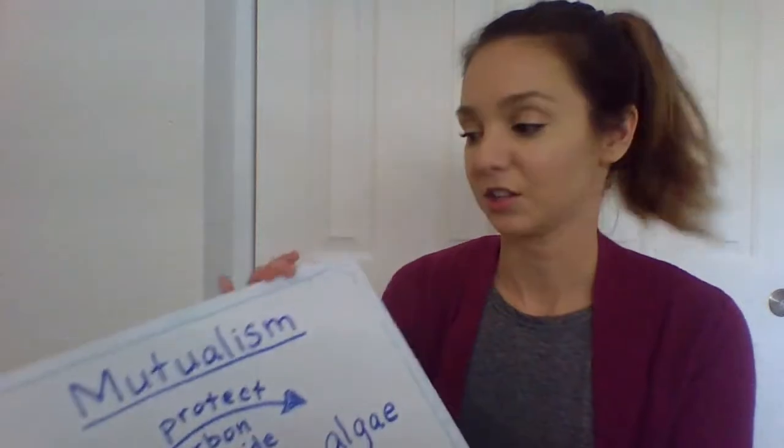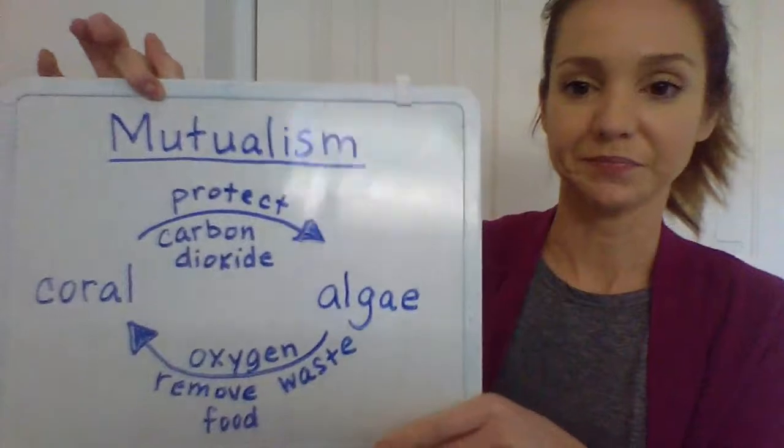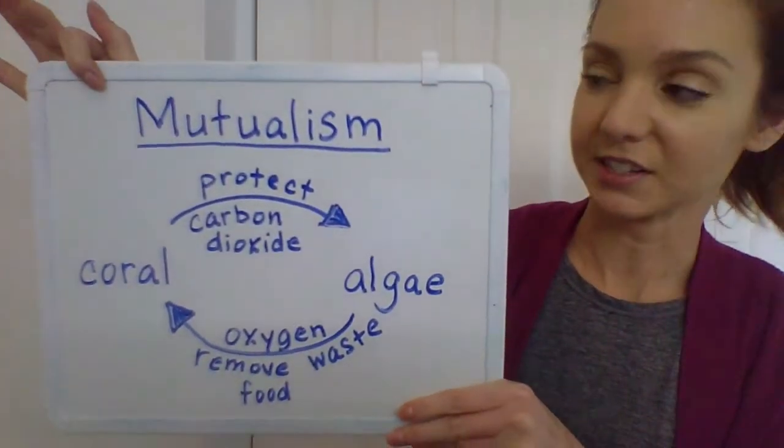There's something really cool about coral, and that is that it has a relationship with a plant. You might think that sounds a little funny, that an animal has a relationship with a plant, but it does. It has a special relationship called a mutualistic relationship. There are lots of different relationships that plants and animals have with each other, but the one I want to tell you about today is called mutualism.